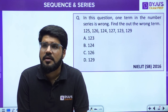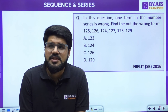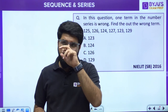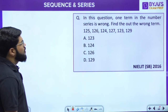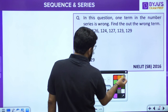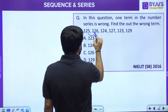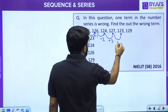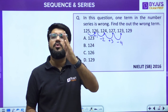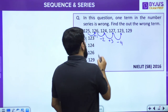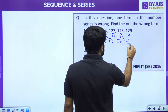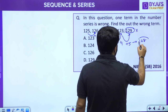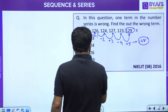Sometimes the question asks for the wrong term rather than the next or missing term. The series is: 125, 126, 124, 127, 123, 129, 128. The pattern is: +1, −2, +3, −4, +5, −6 — alternating signs with increasing magnitudes. After 123 the next should be +5 = 128, but 129 is given. So 129 is the wrong term.